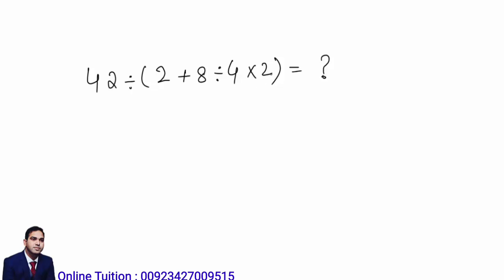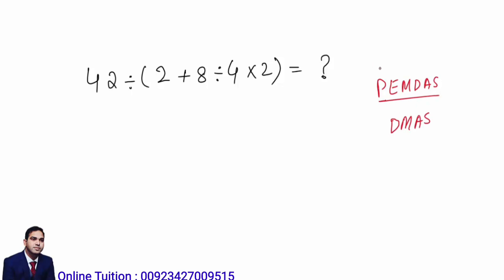First of all, when you solve this kind of question you have to know about the formulas like PEMDAS or DMAS. PEMDAS is Parenthesis, Exponent, Multiplication, Division, Addition, and Subtraction. DMAS is Division, Multiplication, Addition, and Subtraction. This is the order of operations, so you have to follow the rules.